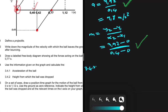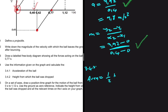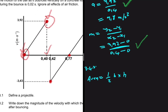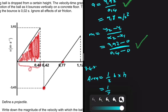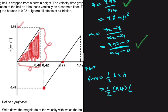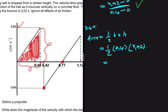Using the area under the graph, the area of the triangle equals ½ × base × height. Our base is 0.4 and our height is 3.92. Calculating: ½ × 0.4 × 3.92 = 0.784. So the answer is 0.784 meters — that is the height from which the ball was dropped.